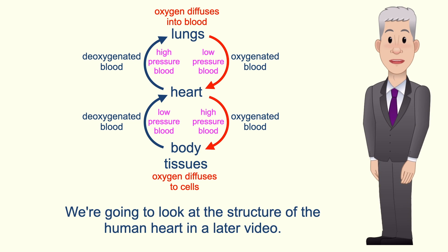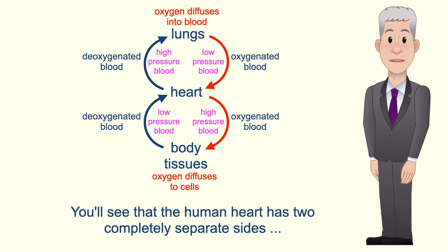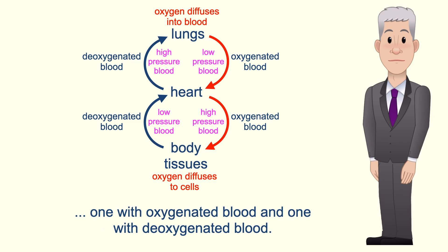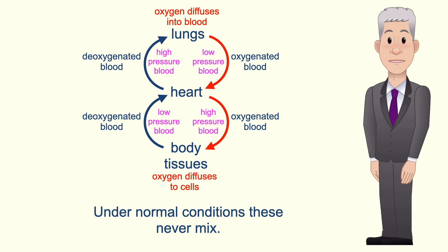Now we're going to look at the structure of the human heart in a later video. You'll see that the human heart has two completely separate sides — one with oxygenated blood and one with deoxygenated blood — and under normal conditions these never mix.